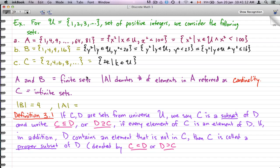Now, A and B are finite sets. When we have like an absolute value, |A|, that would denote the number of elements in A, and it's also referred to as the cardinality.